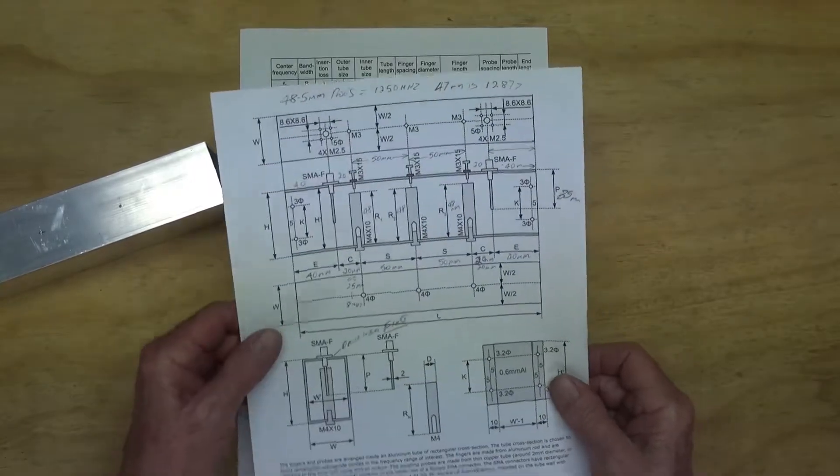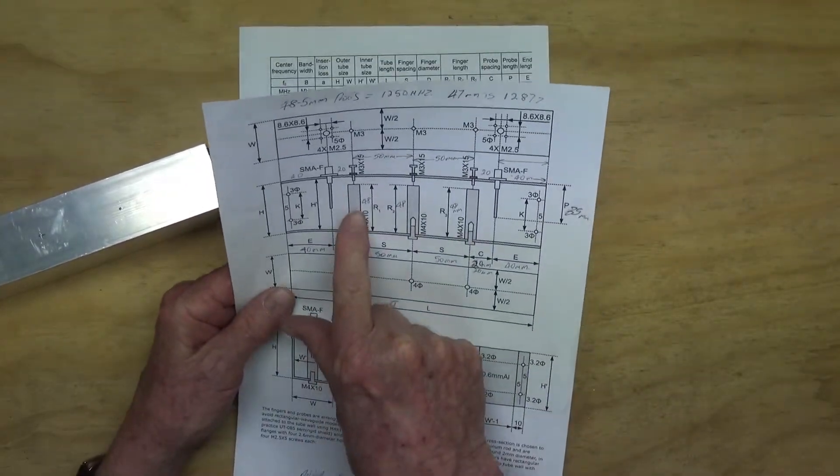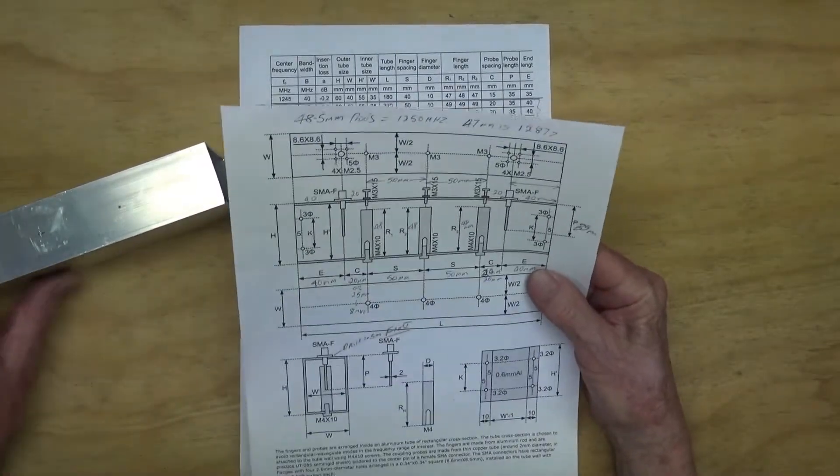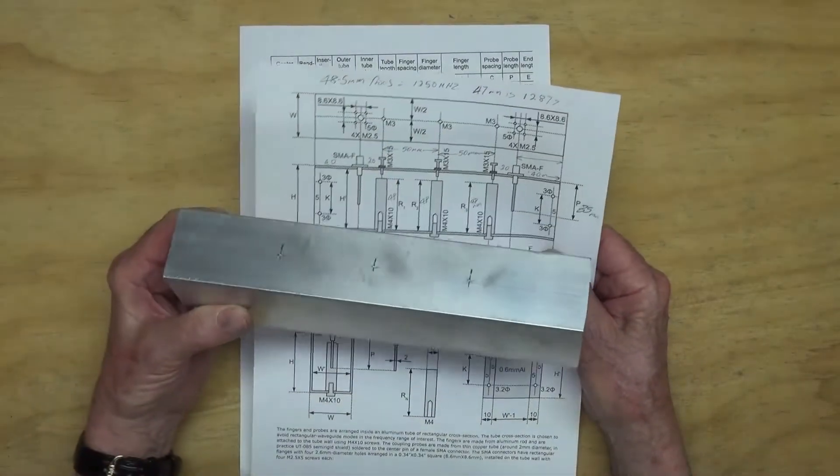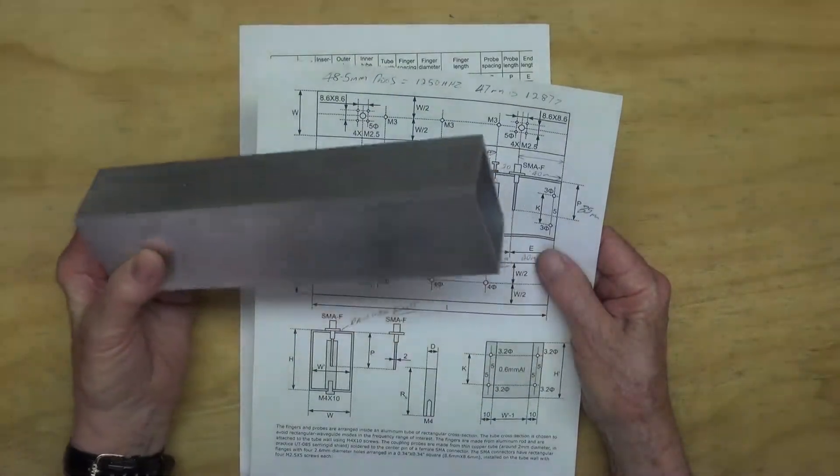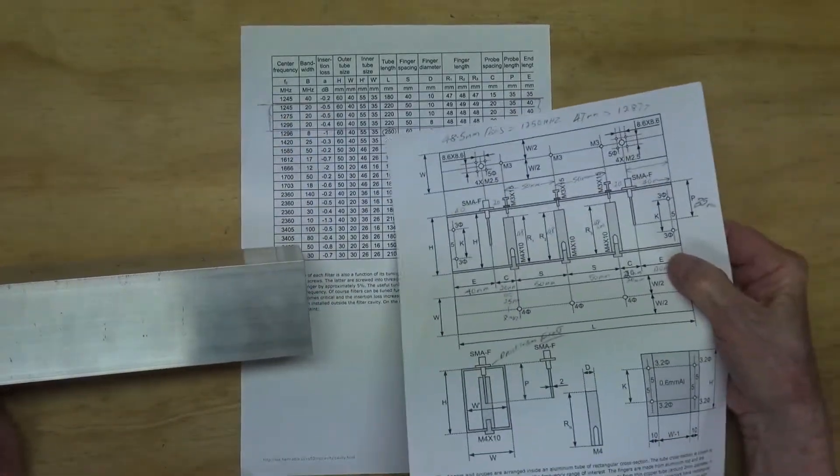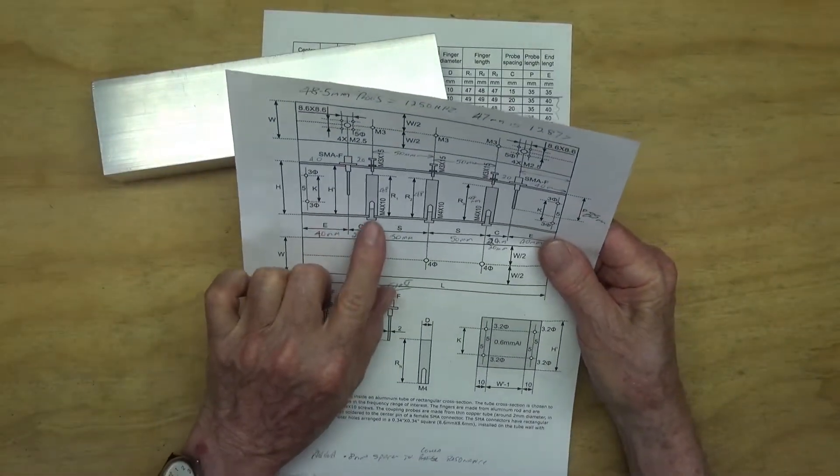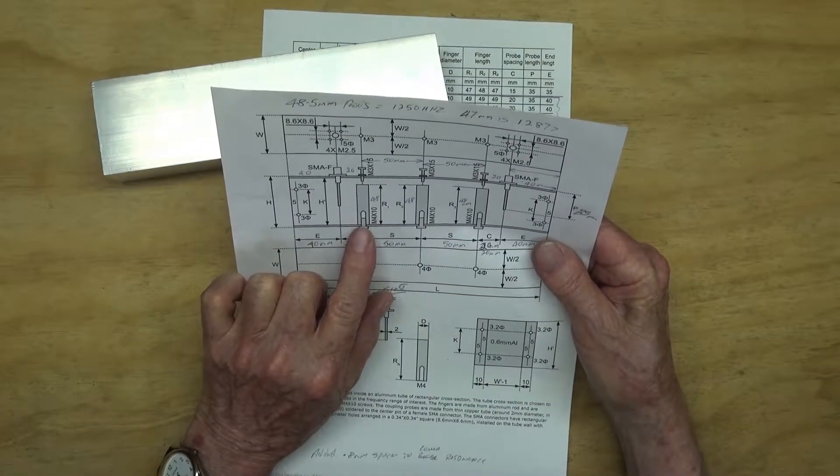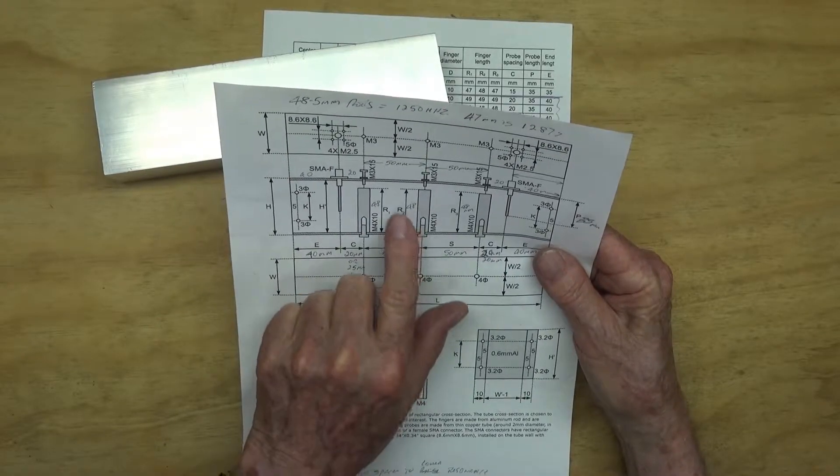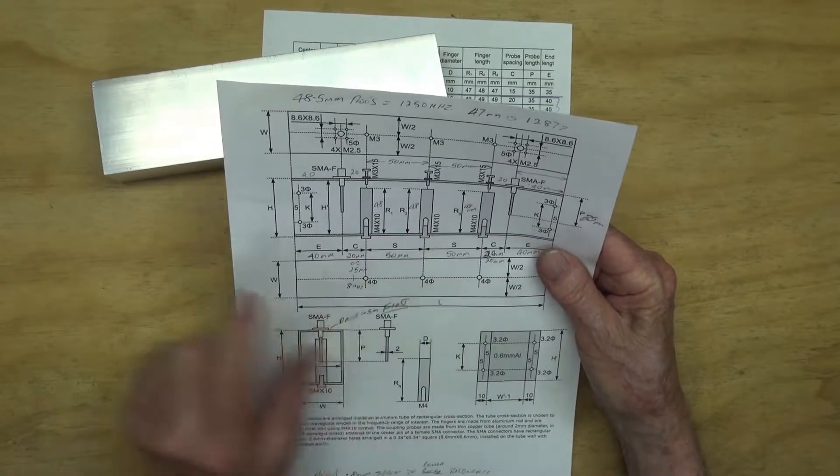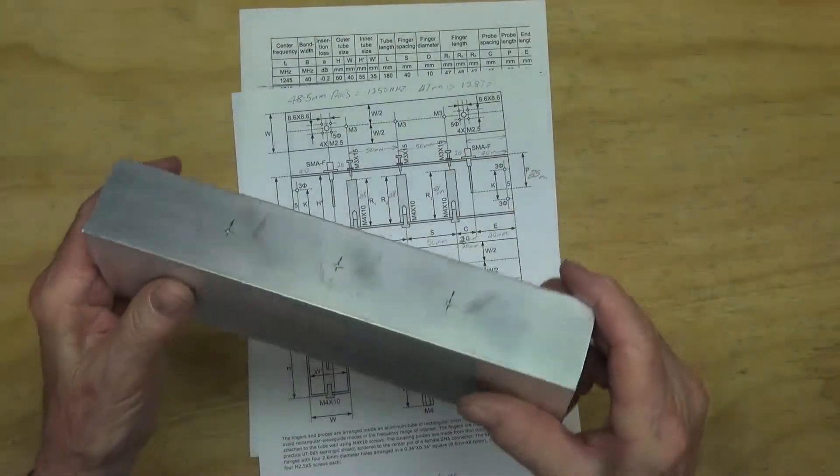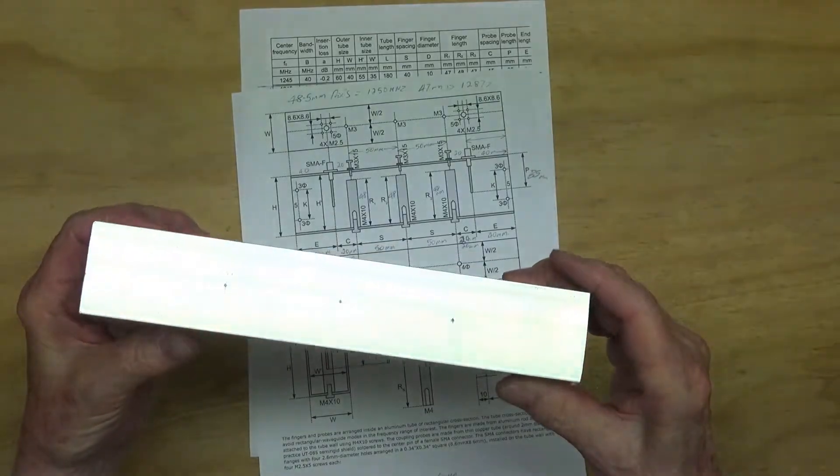The first step is to mark the positions for the three fingers, which is important to get accurate. The length of the tubing has been cut to 220mm, which is what's called for in the design. We come in 60mm from each hand for the first one, and then 50mm space between the second and the third one. I've already center-punched those holes, so we'll drill those now.